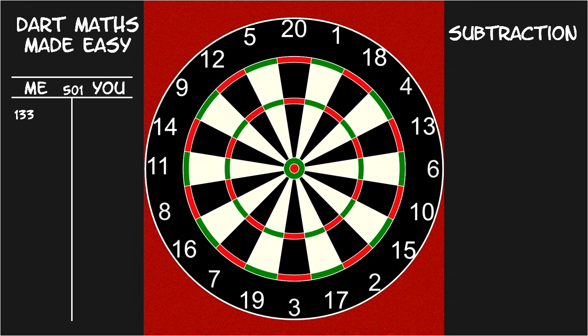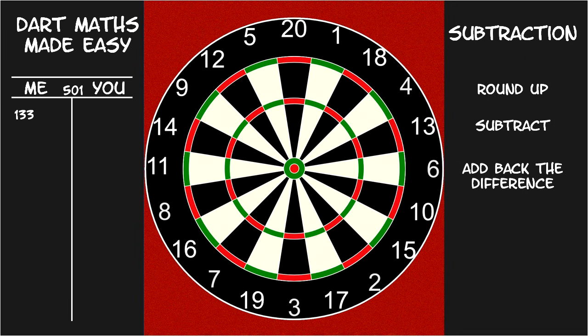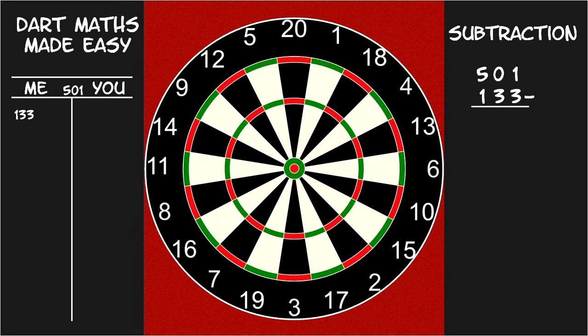Okay. Let's talk subtraction. The trick here is similar to the trick used for addition. We will round up the number to be subtracted. Then, after subtracting it, we will add back in the difference. In our previous example, the first player threw 133. The scorekeeper must now subtract that score from 501. Start by rounding 133 up to 140. The subtraction now becomes much easier to do in your head. When the rightmost digit of the number being subtracted is a 0, the rightmost digit of the other number automatically gives you the first digit of the answer.